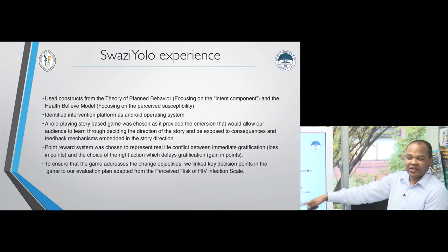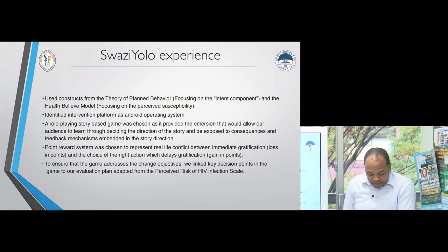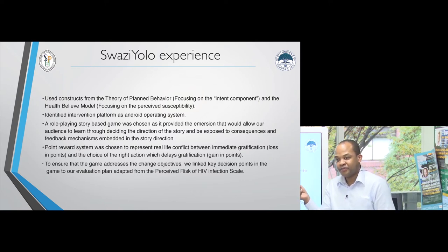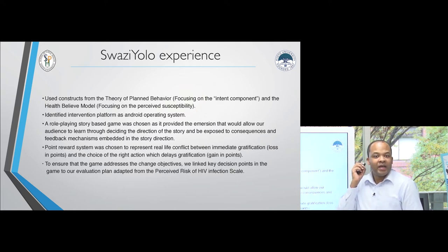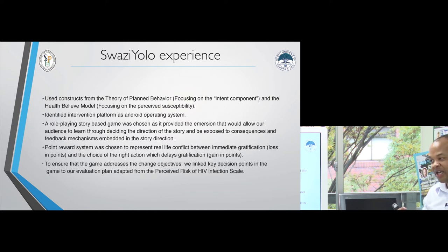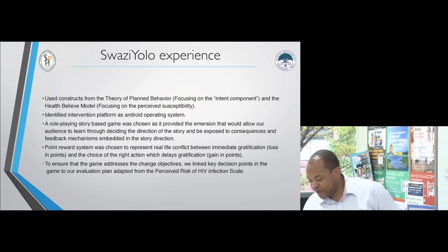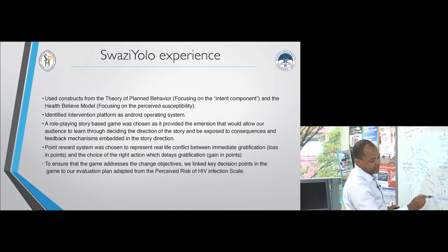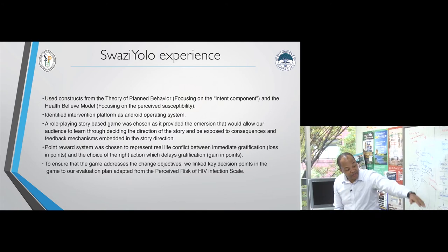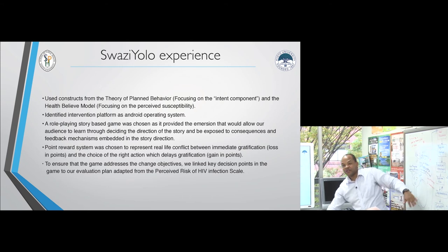We decided on strategies like the point system and reward system in the game, and ensured that the game addressed the change objectives by linking key decision points in the game to our evaluation plan. This is a very important component — evaluation is at the end, but the beauty of this model is that you don't start thinking about evaluation only at the last step. You think about evaluation throughout the entire process, and you finalize it at that stage. The model is not just one-way; you move through steps iteratively.